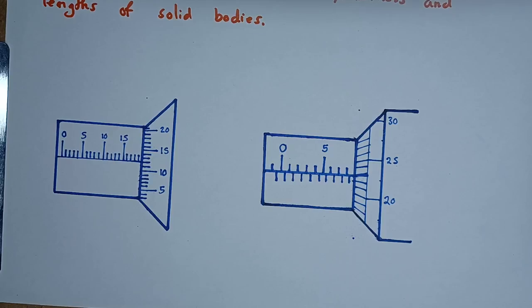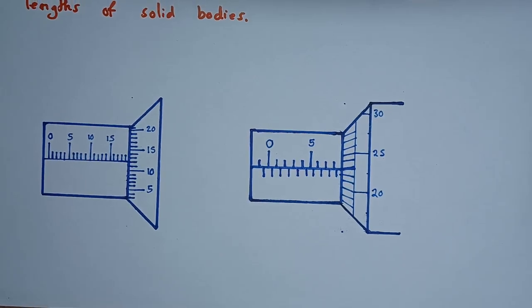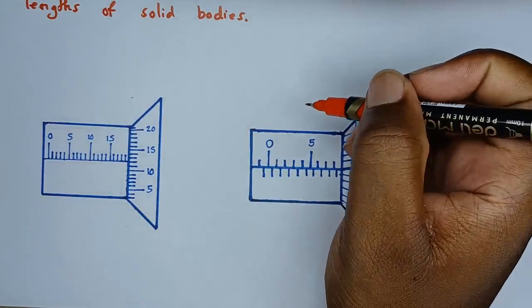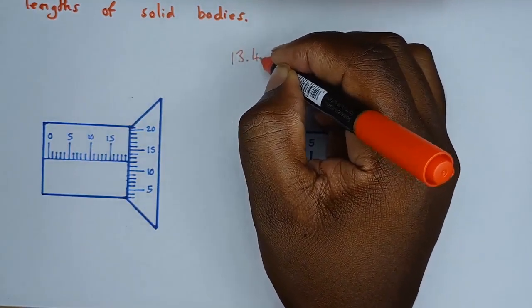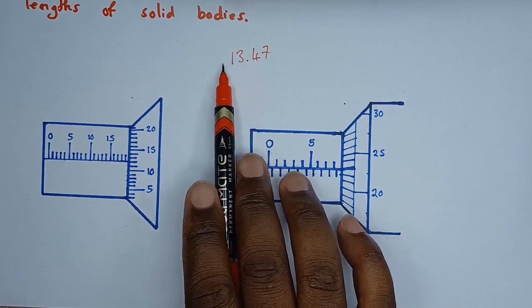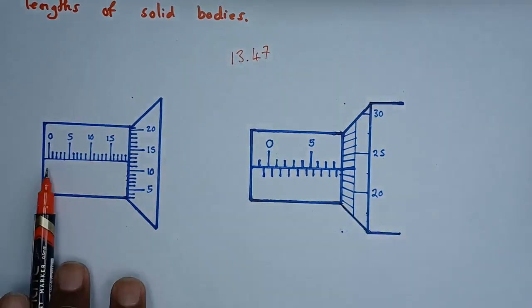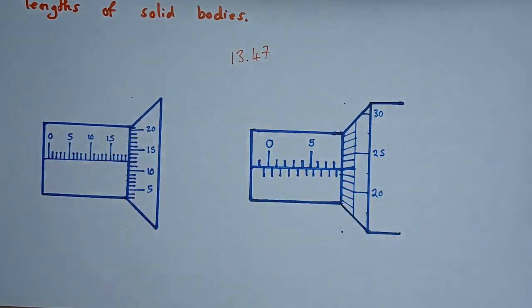It's important to note that measurements on the micrometer screw gauge are in millimeters. We first read the main scale, then the thimble. The values before the decimal point are obtained from the main scale, and the values after the decimal point are obtained from the thimble. I'll read each separately and then add them together.